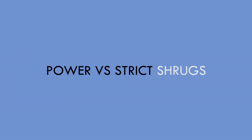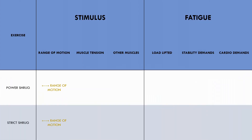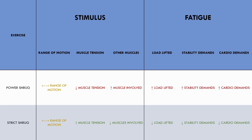The second example is power shrugs versus strict shrugs for the traps. Power shrugs and strict shrugs probably take the traps through a similar range of motion if performed with full range. There is probably more tension placed on the traps throughout the entire range using strict shrugs, while there is probably less tension at the top of the range for power shrugs due to the ballistic jerk in the movement. There is also much more tension placed on other muscle groups during the power shrug. Power shrugs involve much heavier loads and therefore require higher stability and cardiovascular demands. So the power shrug is probably equally or less stimulative than the strict shrug but induces much higher levels of systemic fatigue. Therefore, the strict shrug is probably a better choice for upper trap hypertrophy.